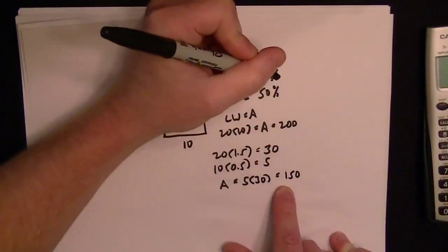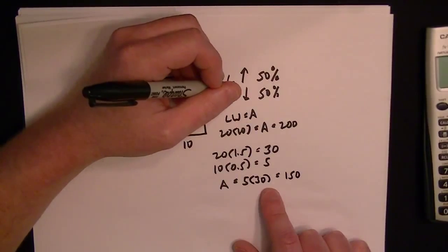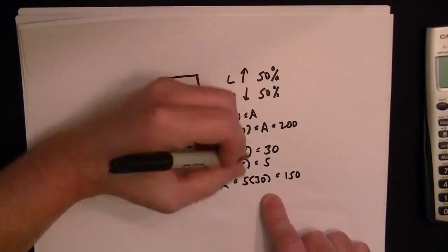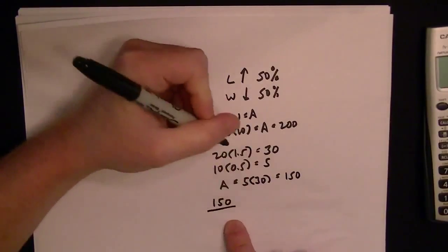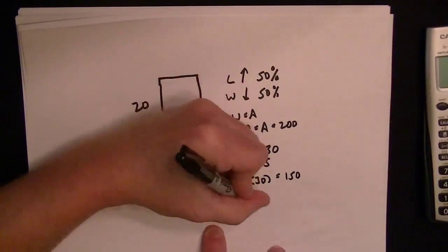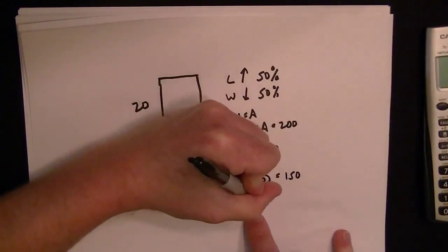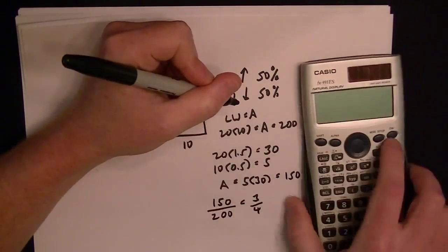So the new area is 150. Now in terms of a percentage, comparing the new garden to the original garden, we'll put the new garden area and divide by the original garden. So 150 over 200 as a fraction simplifies down to 3/4.